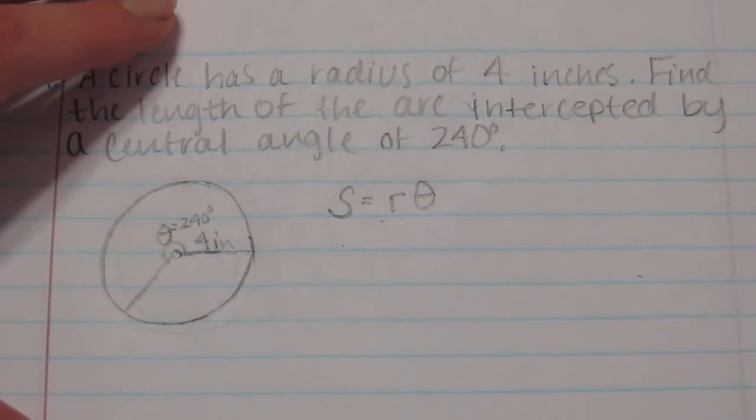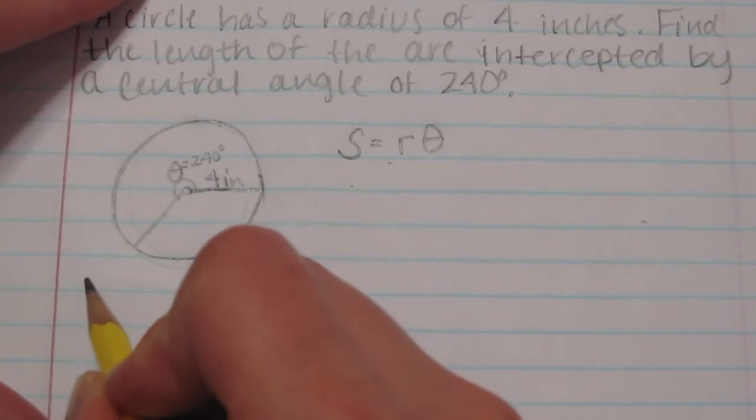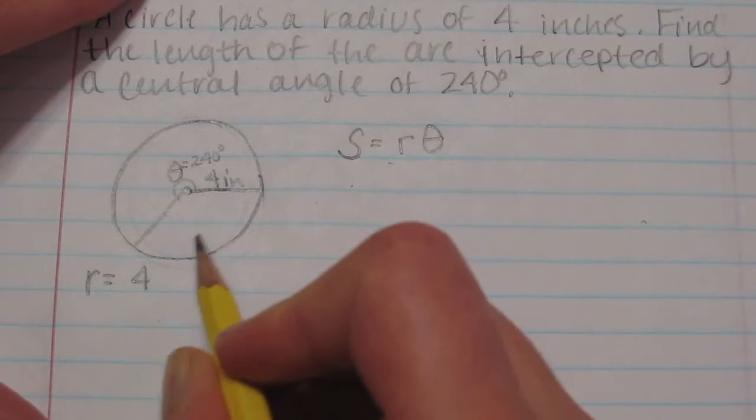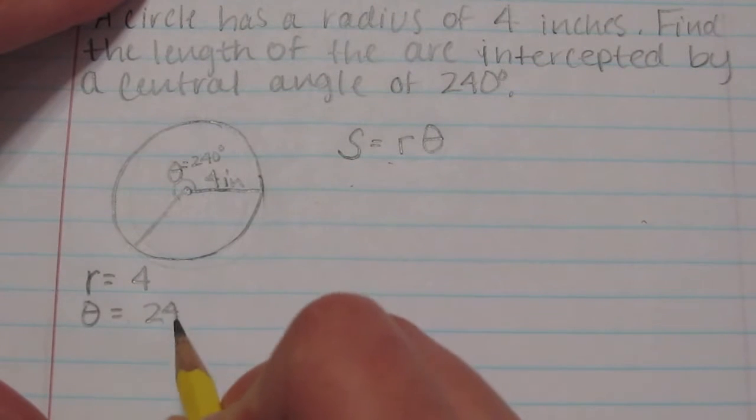So I'll show you how to do that. First over here I'll write down the radius is equal to 4 and theta is equal to 240 degrees.